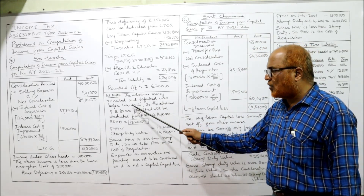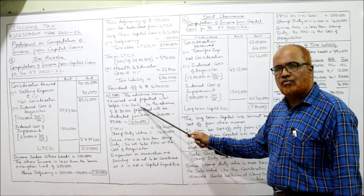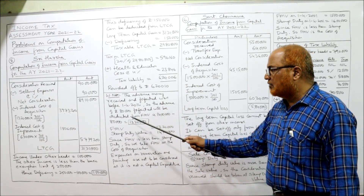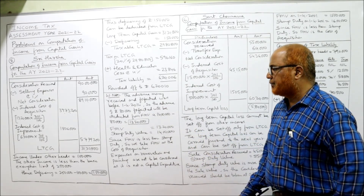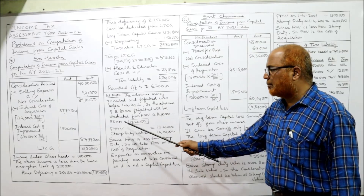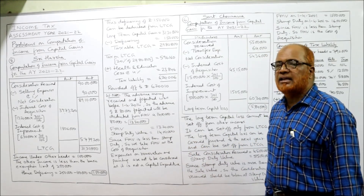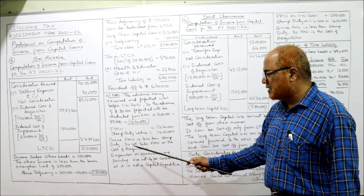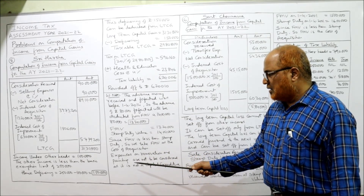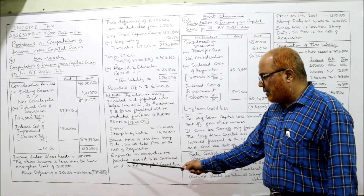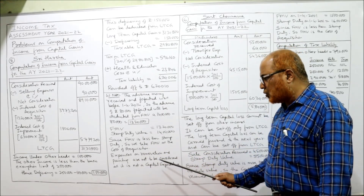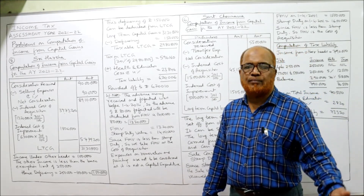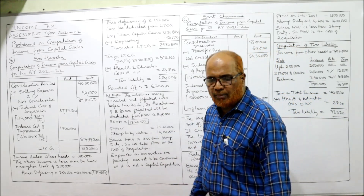To summarize problem five: the advance money received and forfeited was before 1-4-2014, so Rs. 80,000 is deducted from FMV — Rs. 14 lakh minus Rs. 80,000 equals Rs. 13,20,000. Expenses on renovation and painting are not considered as they are not capital expenditure. That completes problem number five.